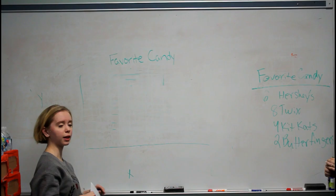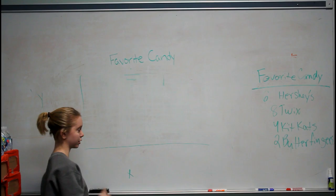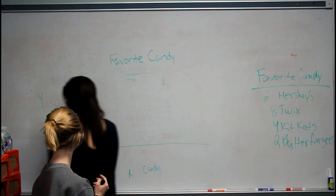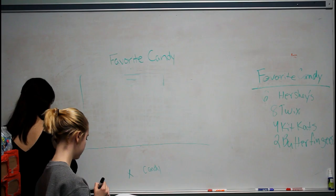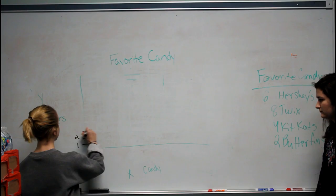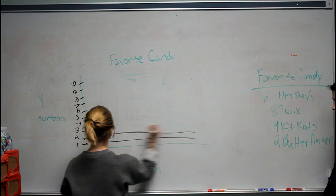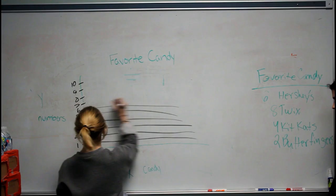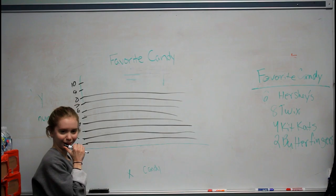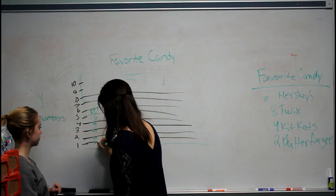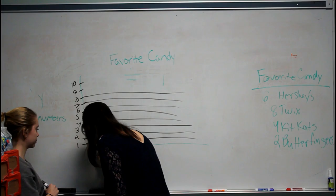What can we call the X-axis according to our data table, Michaela? Candy. Yes, let's write Candy right here. And what can we label our Y-axis? Numbers. Then we make our scale from 1 to 10, and make our extended lines all the way across up to 8. What is the first bar we have to graph? Hershey's. And where would we need to draw it? At 6. So we count to 6 and write Hershey's.